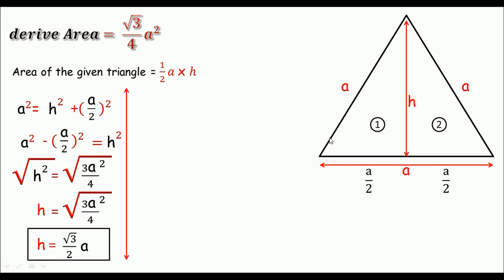We put this value in the above formula like the area equals 1 half times a times h. h is square root 3 divided by 2 times a.